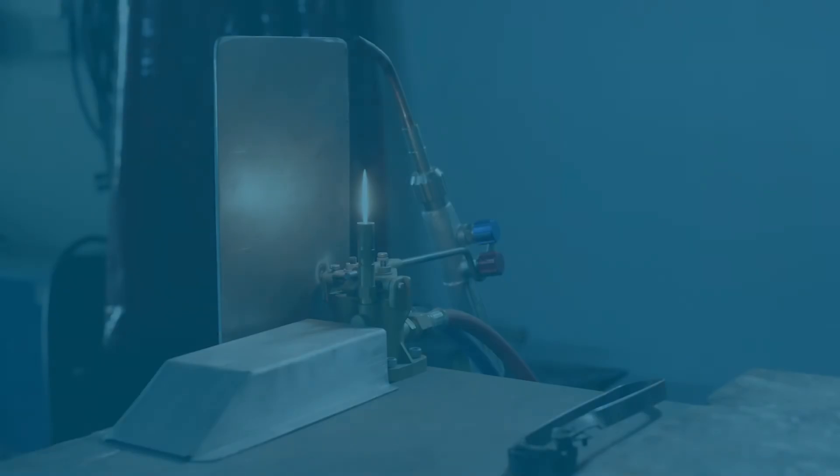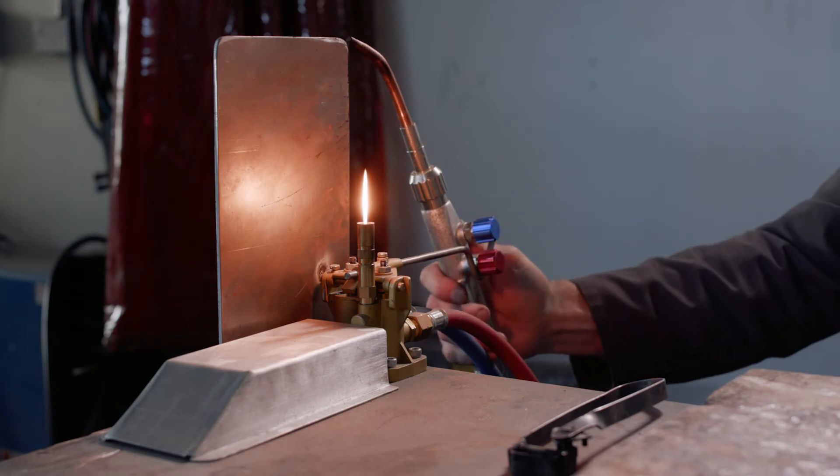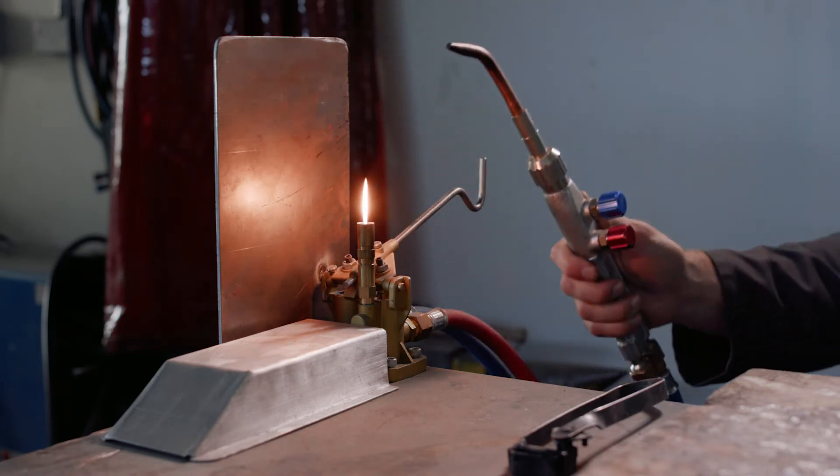When the torch is lifted from the cradle, the gas supply is turned on. To light the torch, pull the nozzle backwards through the flame.